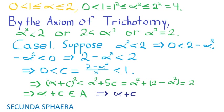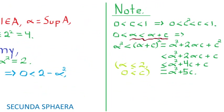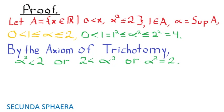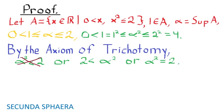Then alpha plus c is less than or equal to the supremum of A, which is alpha. But according to the note, this is impossible, as alpha is less than alpha plus c, and this contradicts the law of trichotomy. This is a contradiction which arises from supposing that alpha squared is less than 2, so it is impossible for alpha squared to be less than 2.